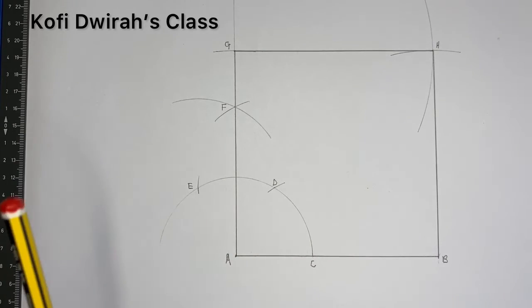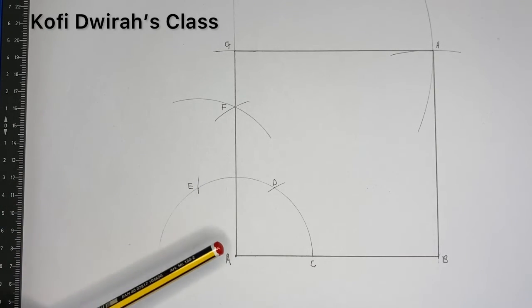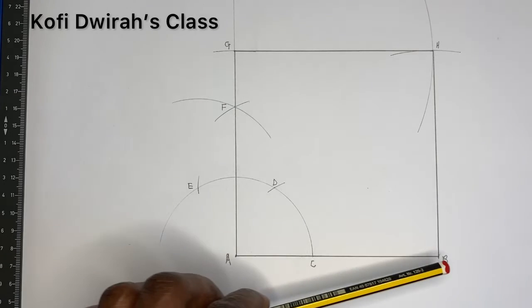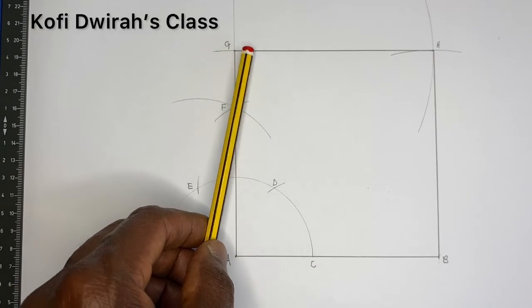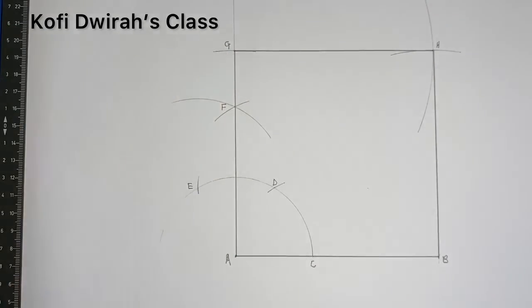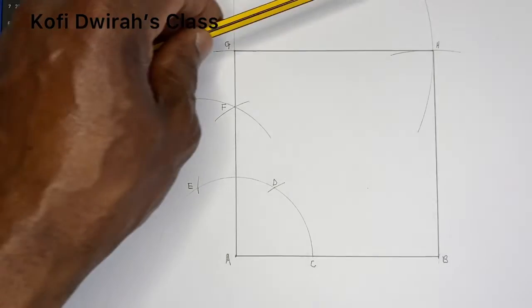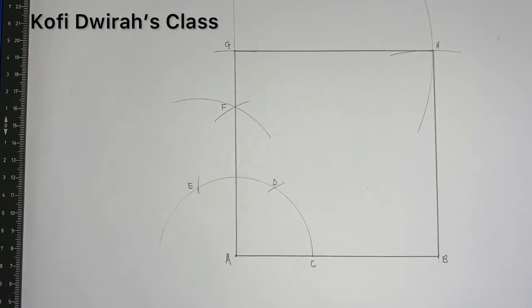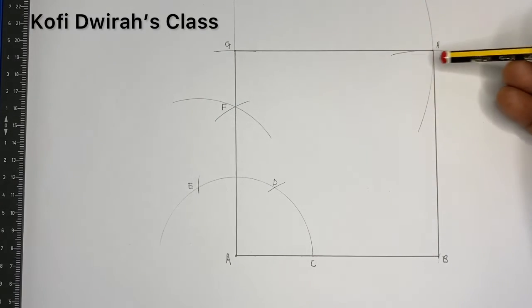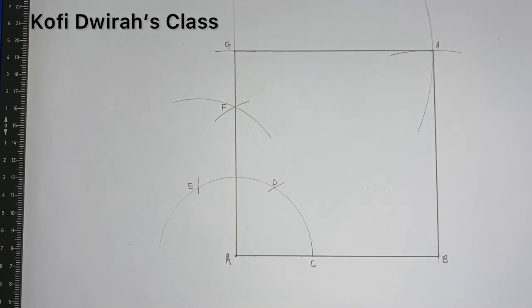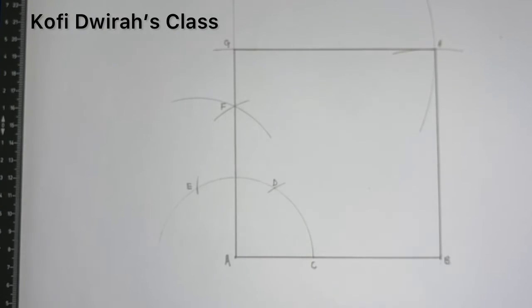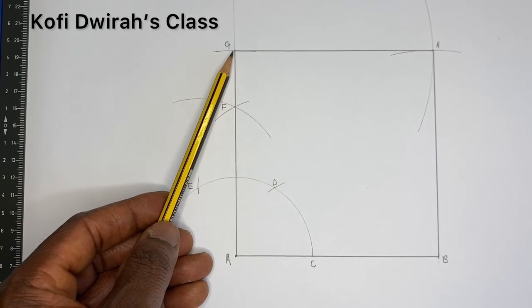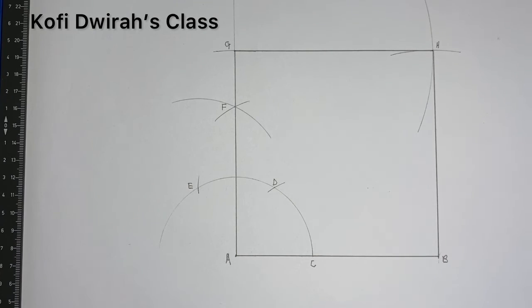Then you measure line AB, which is one side of the square. With the same radius at point A, you draw an arc to get point G. Then with the same radius at point G, you draw an arc. With the same radius at point B, you draw another arc to get H. Then you draw a line from B to H, and another line from G to H to get the square.